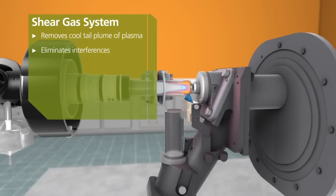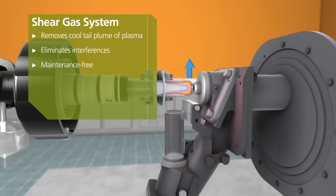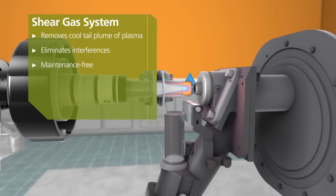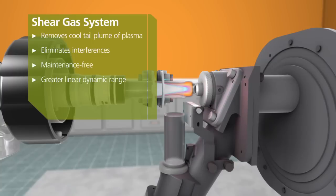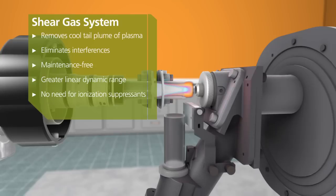By using air instead of expensive high extraction systems or cones that tend to clog and require cleaning, this innovative system is maintenance-free, improves performance, and enables a greater linear dynamic range. Removing the tail plume also minimizes the need to add expensive ionization suppressants.